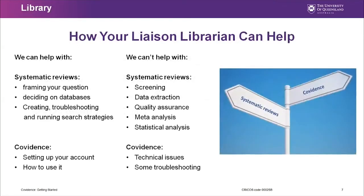Your liaison librarian can help with framing your question, which is vitally important — you need to get your question right to have a good systematic review. We also help you decide on databases and run search strategies, which we're very good at. We can help set up your Covidence account and provide instruction on using it. However, the screening process, data extraction, quality assurance, meta-analysis, and statistical analysis fall outside the liaison librarian's usual scope.